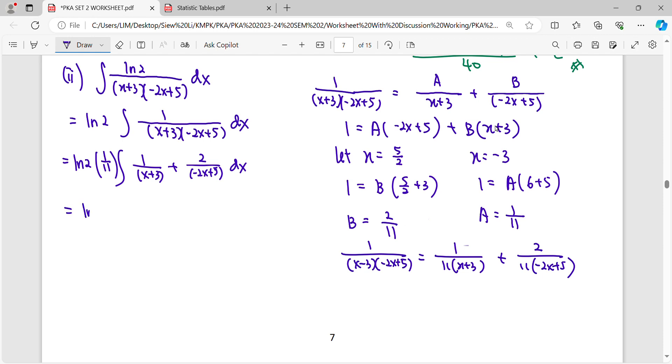So 1/11 integrate 1/(x+3) gives ln(x+3)/1. Why 1? Because coefficient of x is positive 1. Don't forget that step. And for this one, 2 we factorize out: ln(-2x+5)/(-2). When you integrate a fraction, you get ln, but don't forget you divide by the coefficient of x.